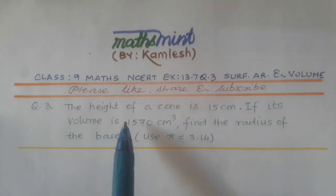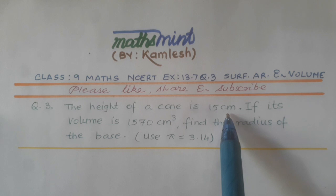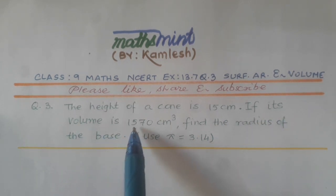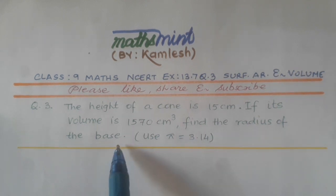The question states: The height of a cone is 15 cm. If its volume is 1570 cm³, find the radius of the base. Use π = 3.14.